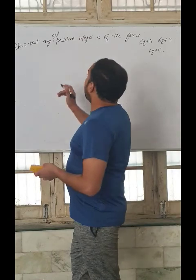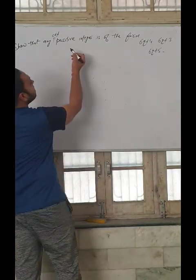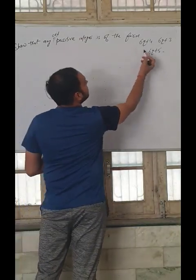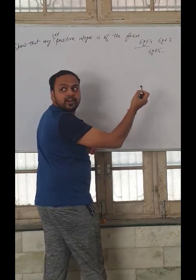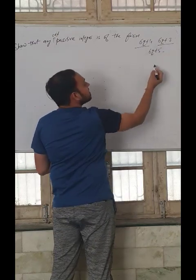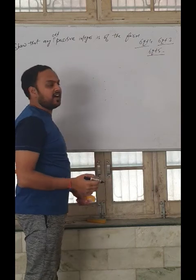So we will prove that any positive integer is of the form 6q plus 1 or 6q plus 3 or 6q plus 5.